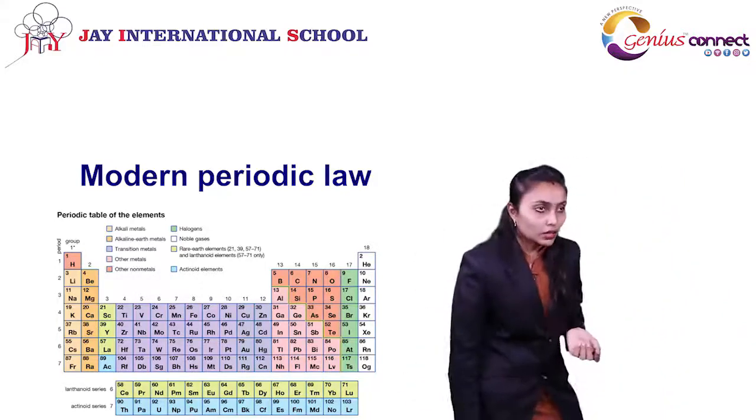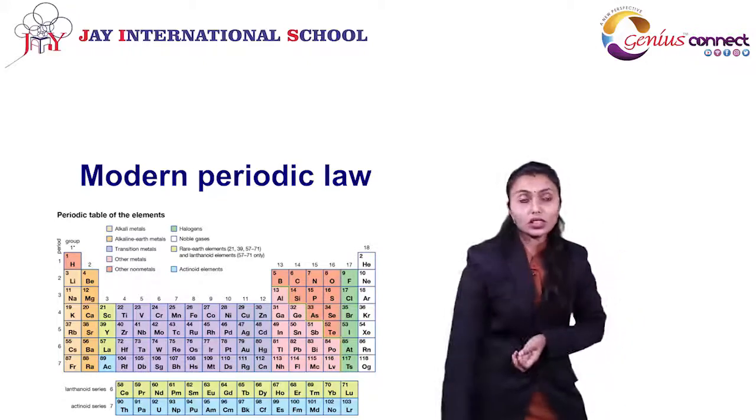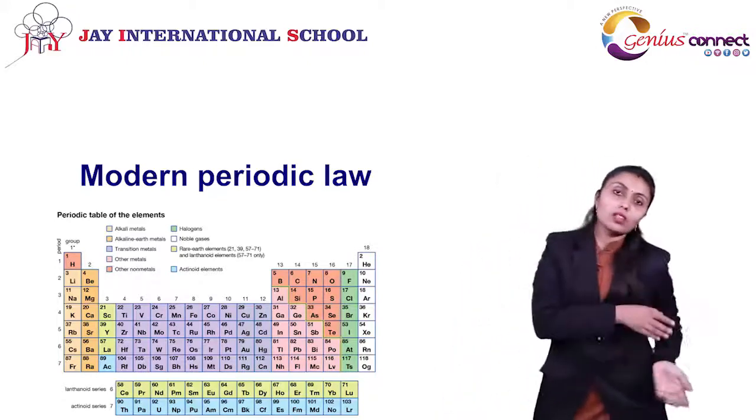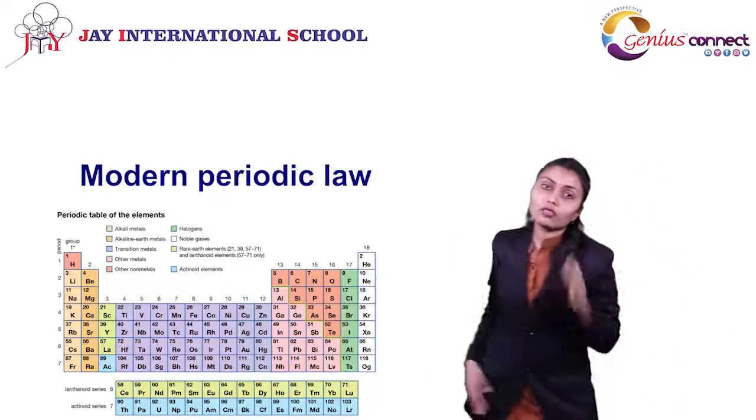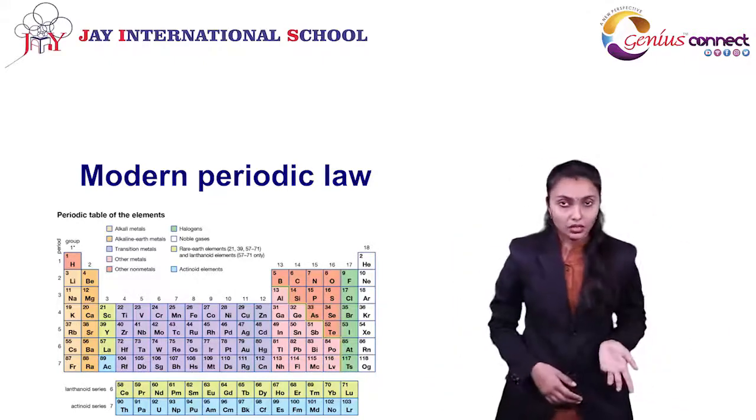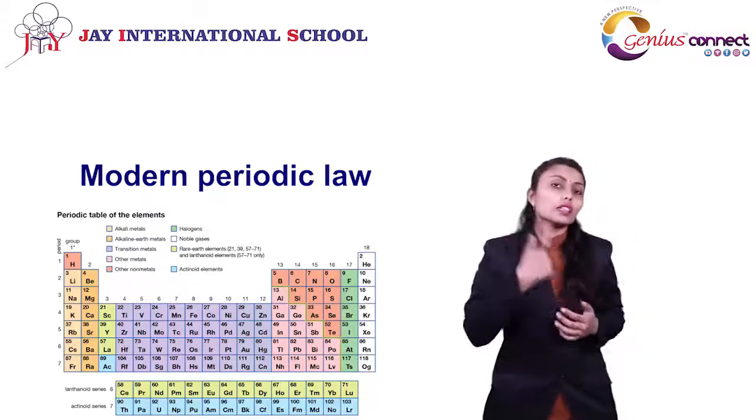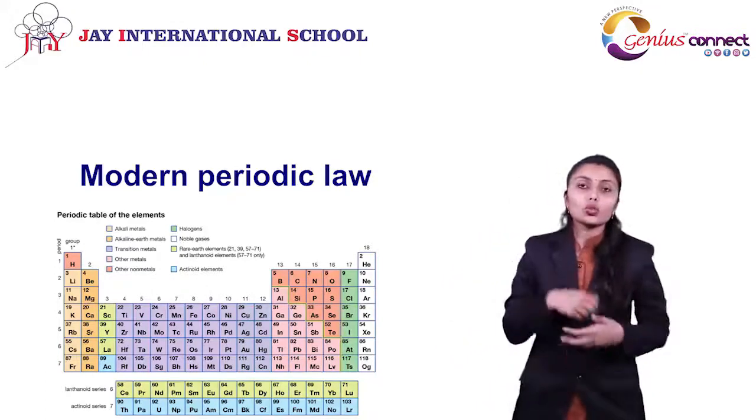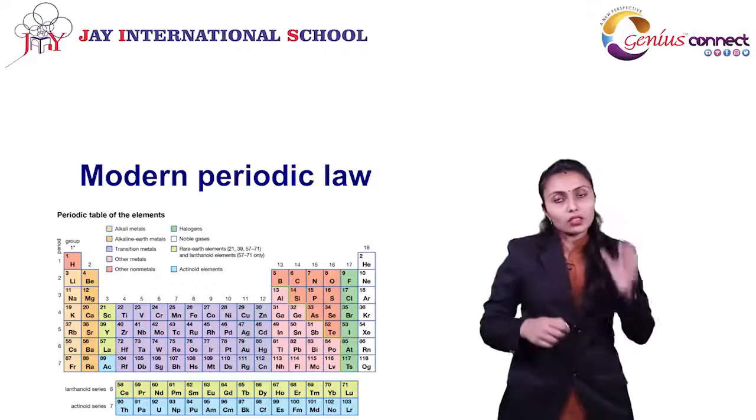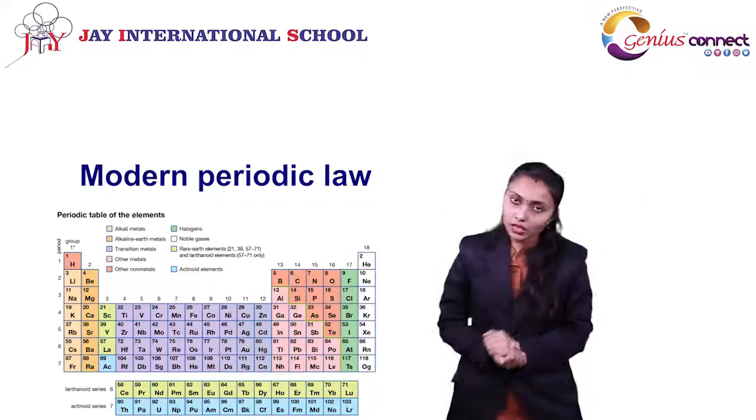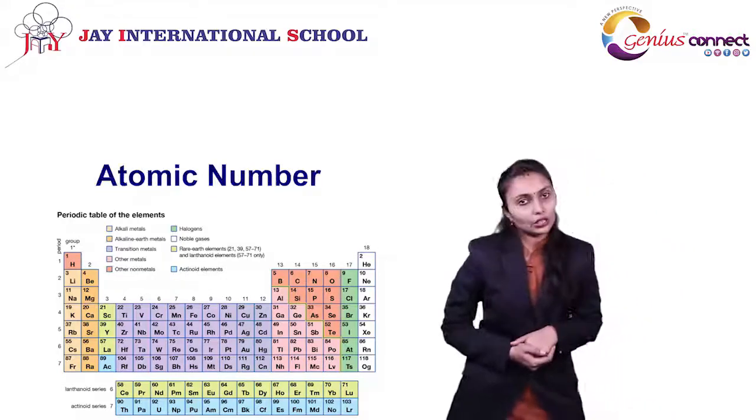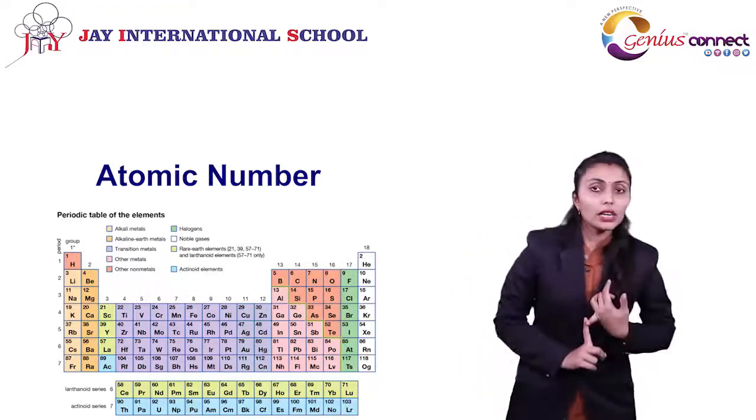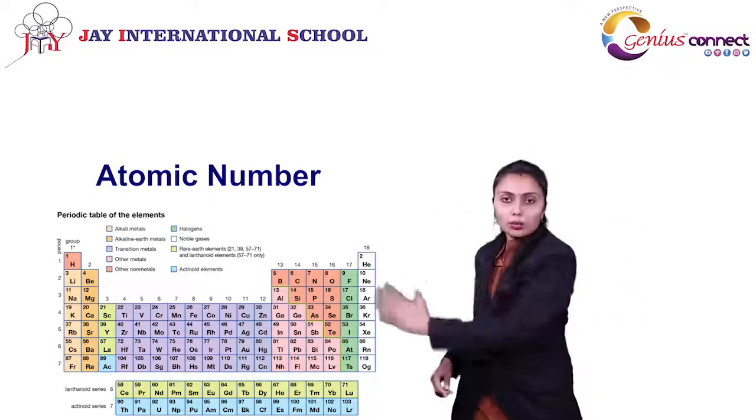If we consider any other properties, some elements have similar properties. So if similar properties, which elements do we need to keep first and which elements last? It was confusing. So scientists identified a way to represent based on atomic number. And we know what is atomic number? The number of protons or electrons. The periodic table is based on atomic number.